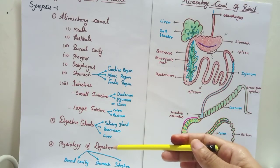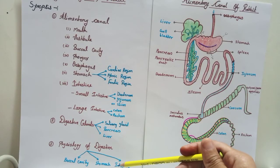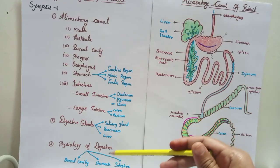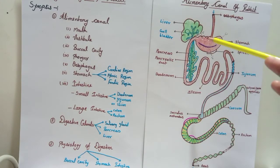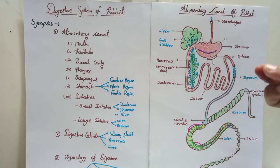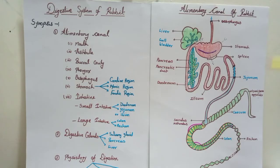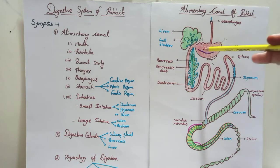The physiology of digestion is the mechanism of digestion. In the rabbit there are three steps of digestion: buccal cavity, stomach, and intestine. The buccal cavity secretes saliva, the stomach secretes gastric juice, the liver and gallbladder secrete bile juice, and the pancreas secretes pancreatic juice. In the buccal cavity, saliva contains two enzymes — mucin and ptyalin. Ptyalin decomposes starch to maltose and dextrin, and the food is converted into bolus — a soft pulpy mass that is transferred via the esophagus.